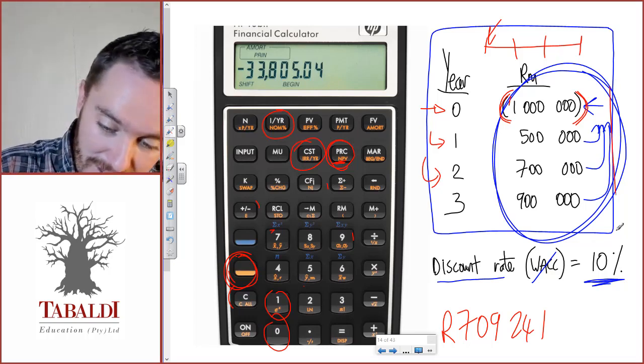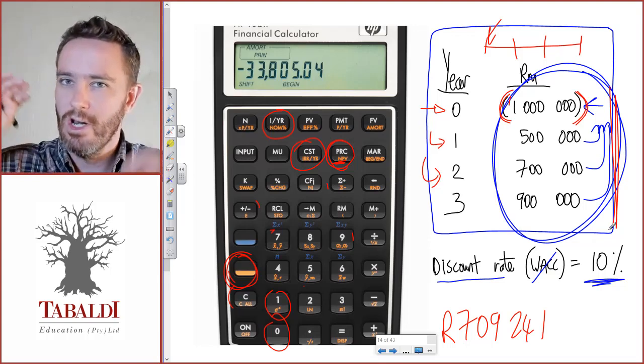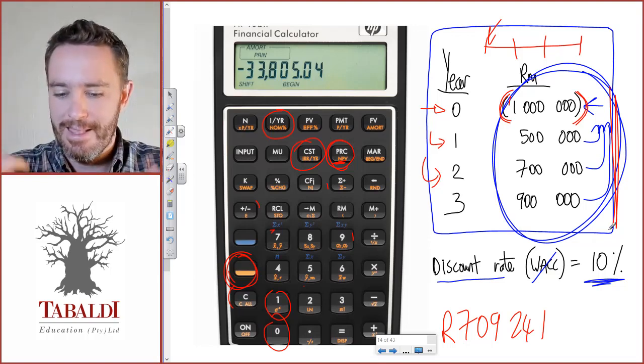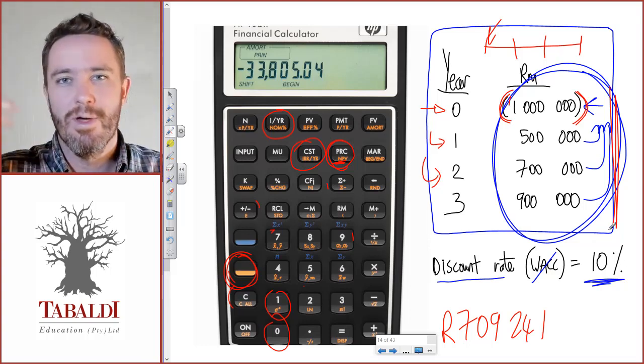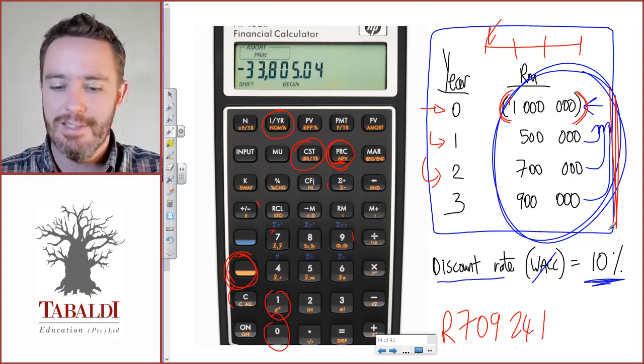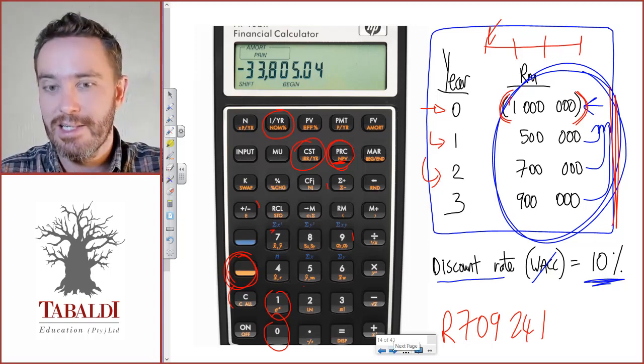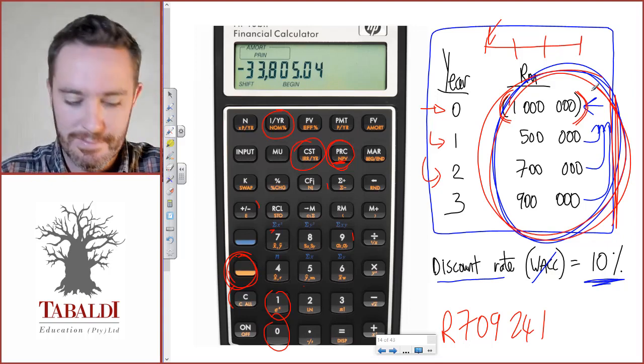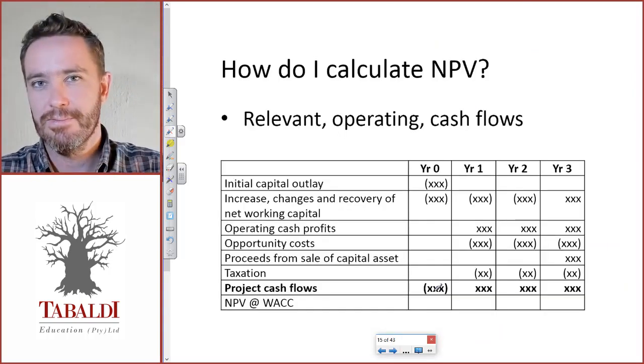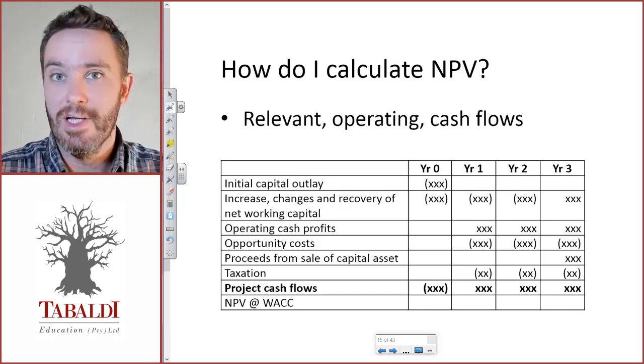That's only if they gave us all the cash flows. Most questions will be a long scenario with lots of information—how much the company will earn each year, what it'll cost, depreciation, wear and tear deductions, etc.—and you will have to calculate those net cash flows instead of them being given. Then we will use this layout, which I will do in the next video.